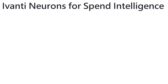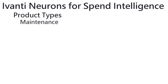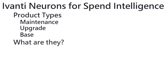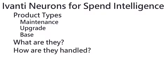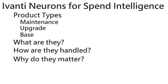Hi everyone. In this Ivanti video we're going to talk about product types: maintenance, upgrade, base — what are the different types of software license you can buy, how are they handled in Ivanti Neuron Spend Intelligence, and why it is important to set this value correctly.